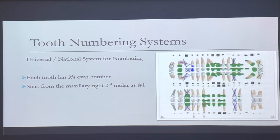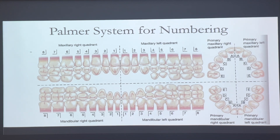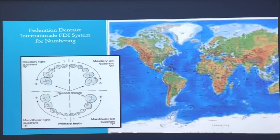This is the Palmer system for numbering, which is what we use in orthodontics. It's broken into four boxes representing your four quadrants: upper right, upper left, lower right, lower left. So if I were to say we're going to bond the upper centrals, I could also say we're going to bond the upper ones. And of course, all around the world there are different ways of charting — depending on where you're at, they might use the Federation Dentaire Internationale, the FDI system. Just know exactly what it is and study that.